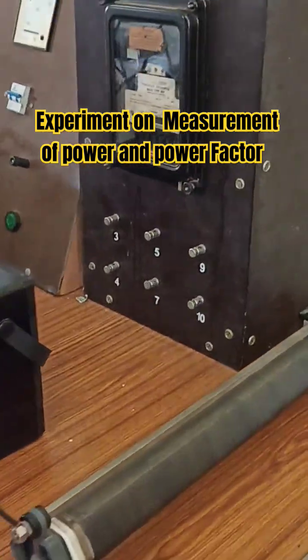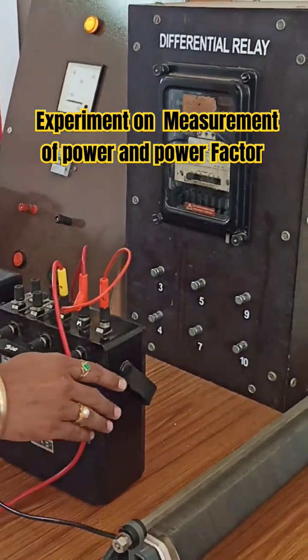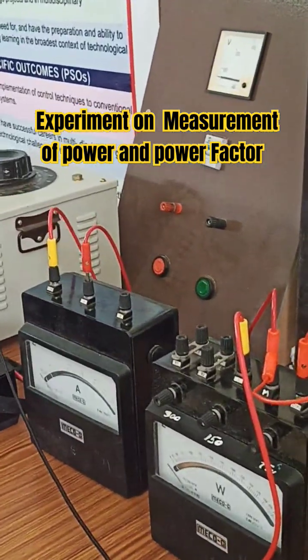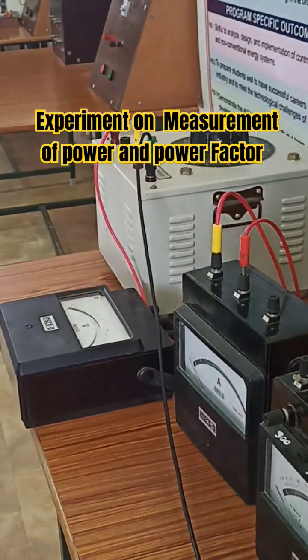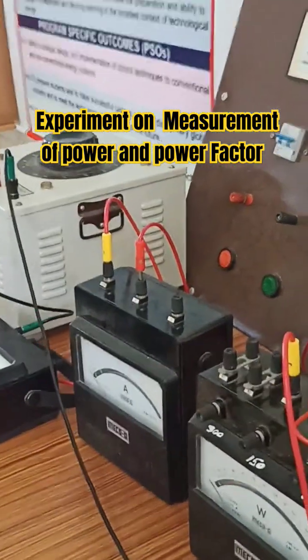From rheostat output to load, these are the connections. Now we want to give the connections for the voltmeter. From the positive terminal, we will connect to the positive.